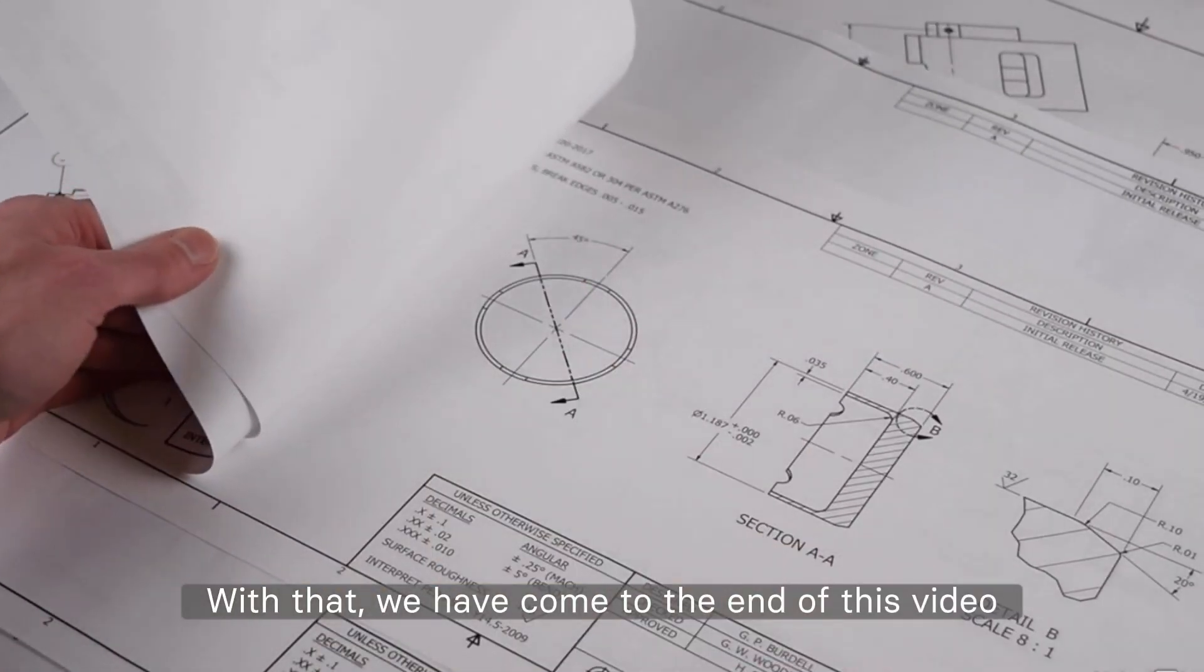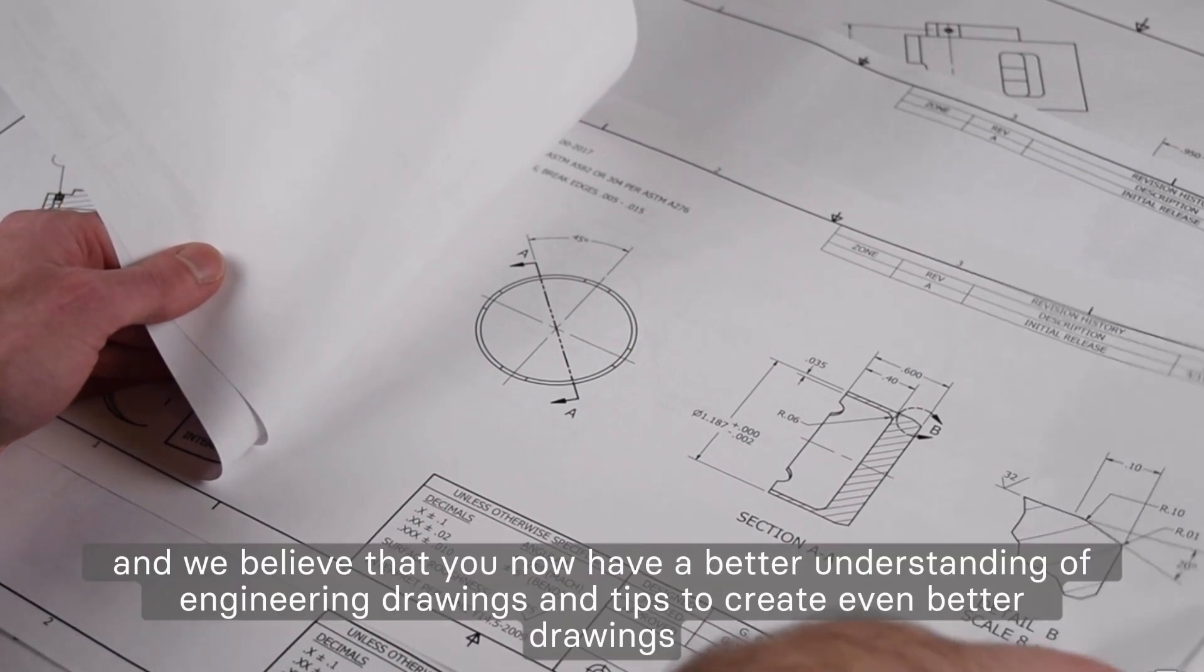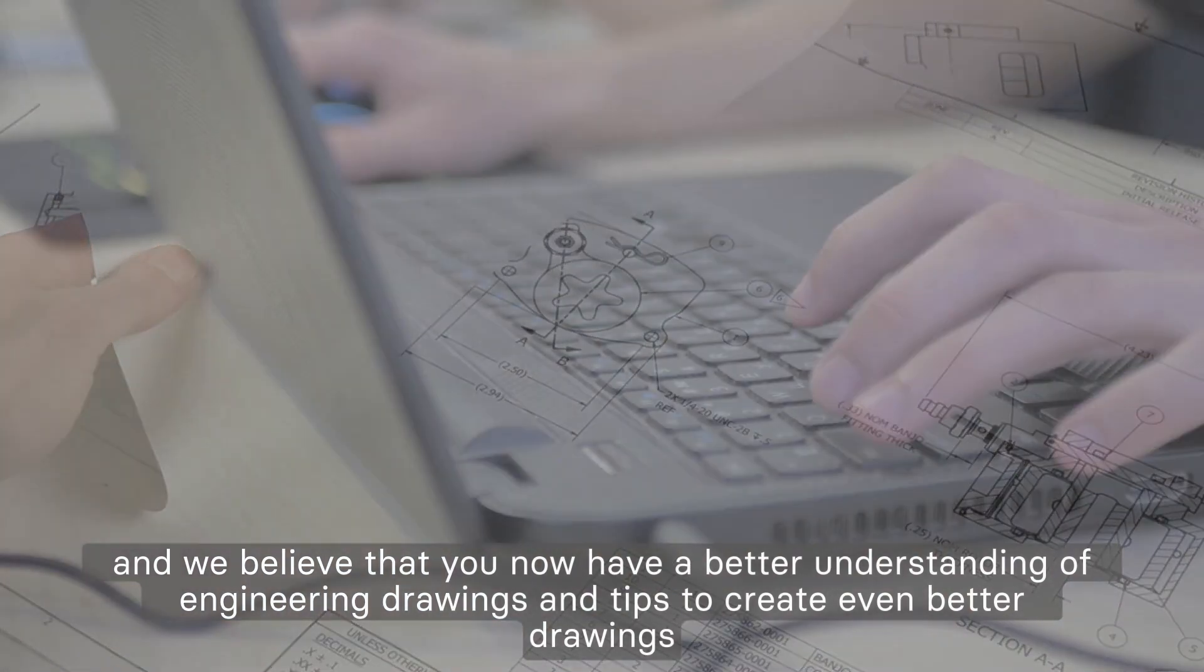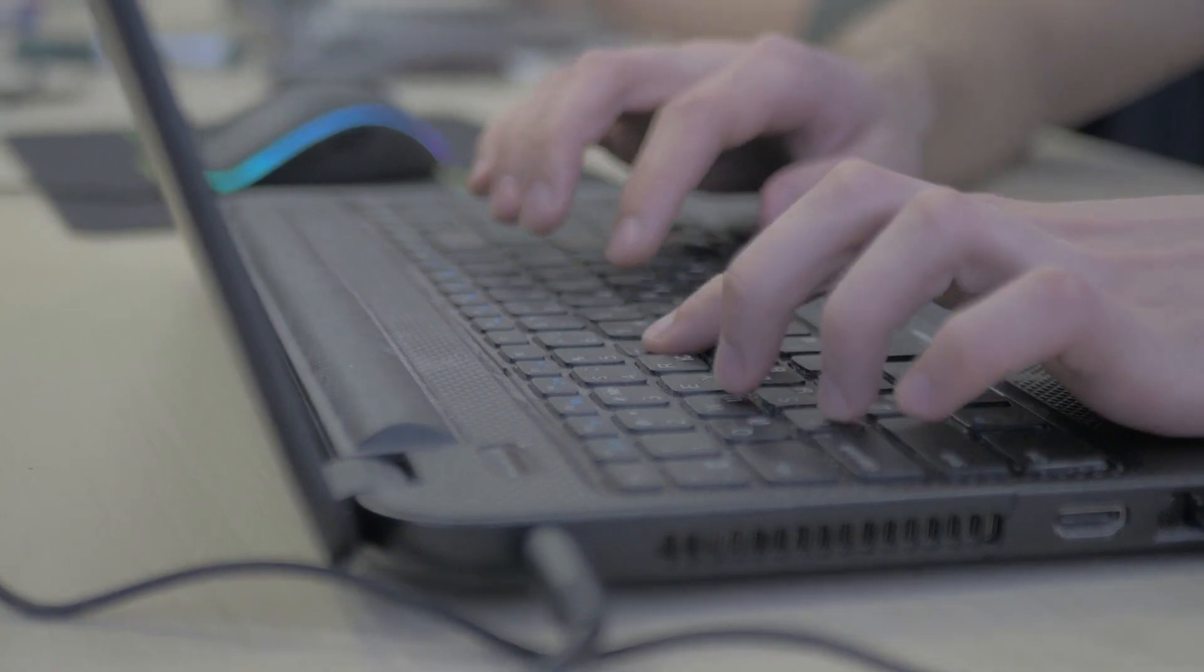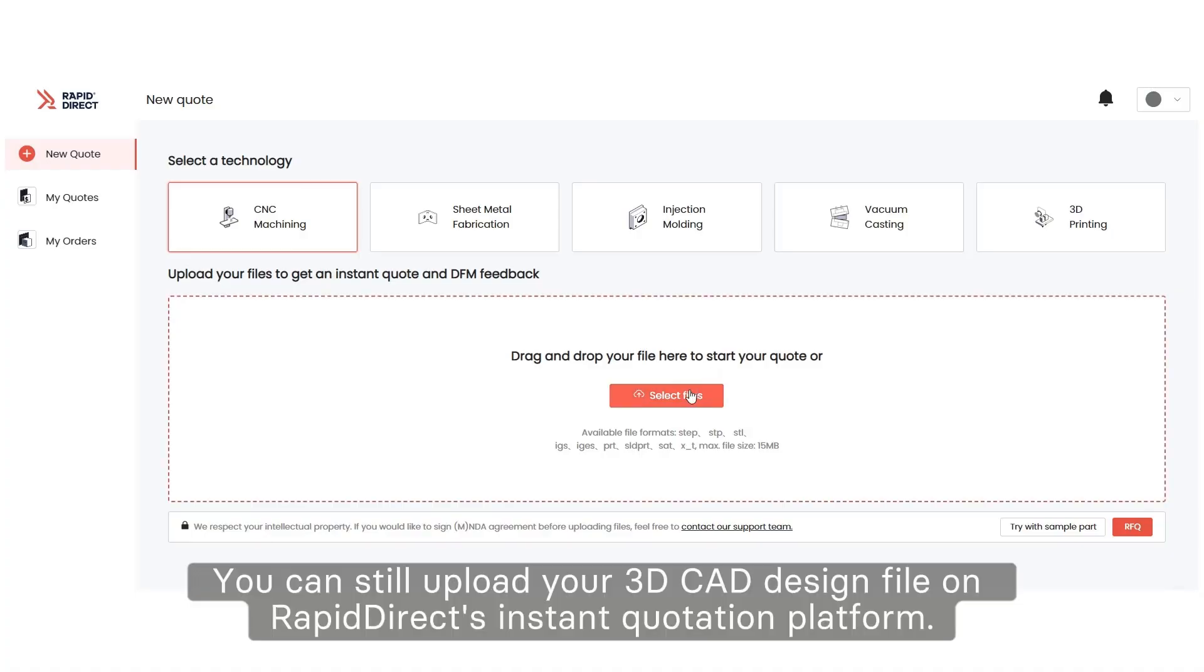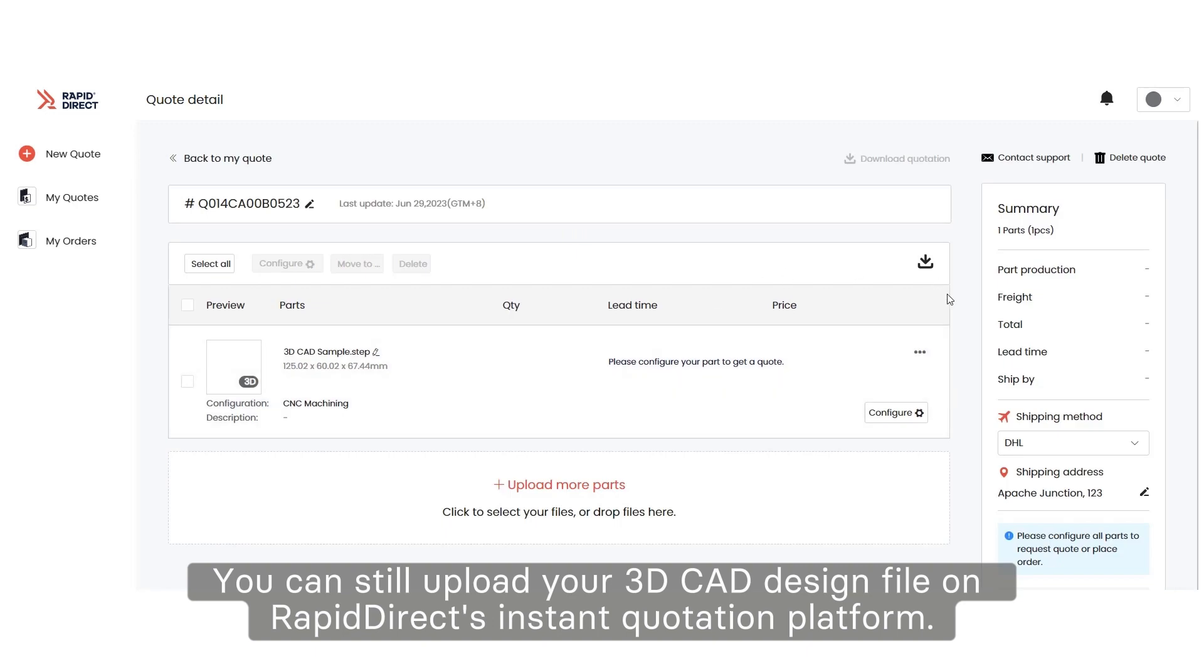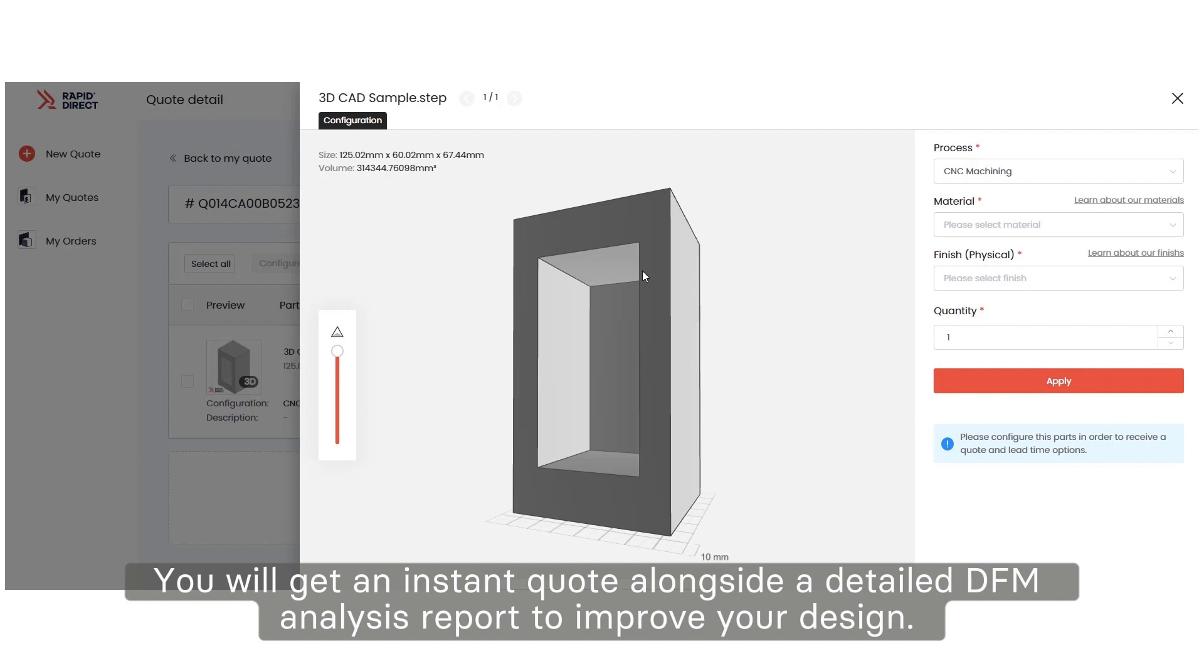With that, we have come to the end of this video, and we believe that you now have a better understanding of engineering drawings and tips to create even better drawings. Don't have an engineering drawing for your CNC machining project? Don't worry. You can still upload your 3D CAD design file on Rapid Direct's instant quotation platform. You will get an instant quote alongside a detailed DFM analysis report to improve your design.